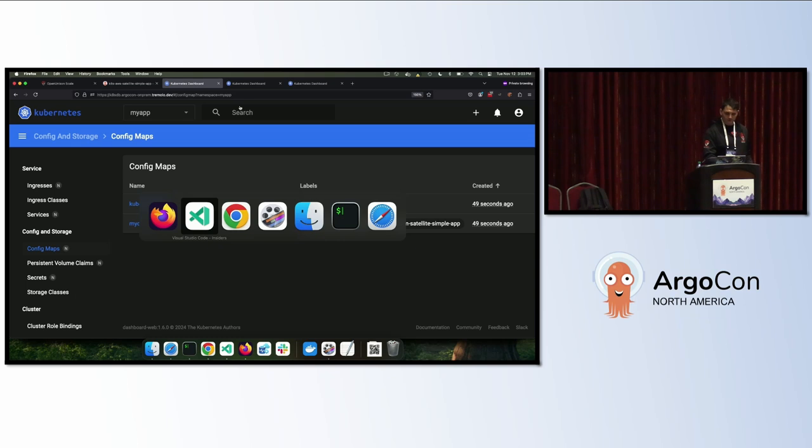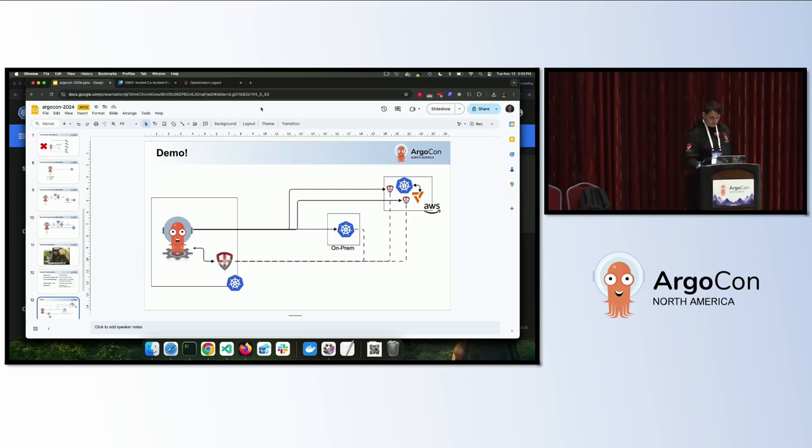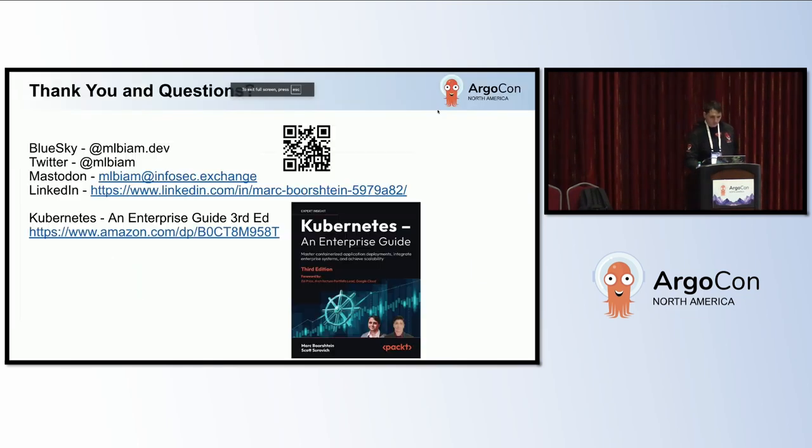So, happy to answer questions, if I can find my thing here. No, I don't, wrong button. I know how to write software. I don't know how to use it. So, thank you. There is a bibliography at the end with references to everything. This is where you can find me on the socials. The QR code, if you want to leave some feedback, please do. That will bring you back to Sched, where you can give me, hopefully, a good review. And if you're interested, my book is Kubernetes and Enterprise Guide, third edition. I'll be doing book signings tomorrow in Loft's booth, I think, at 12. Any questions?